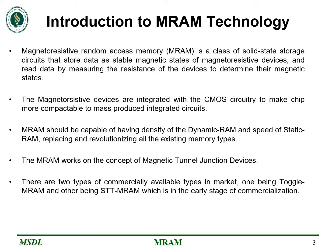Let's first understand what MRAM is. MRAM is a class of solid-state device circuits that stores data as a stable magnetic state and reads data by measuring the resistance of the device to determine the magnetic state. MRAM was designed with the idea that it will be a universal memory, replicating the higher density property of dynamic RAM and the speed of static RAM. MRAM works on the concept of magnetic tunnel junction devices and has two commercially available variants, one being Toggle MRAM, which is in an earlier stage of commercialization.